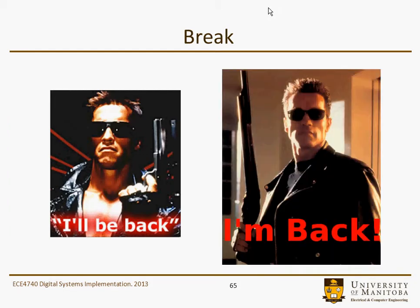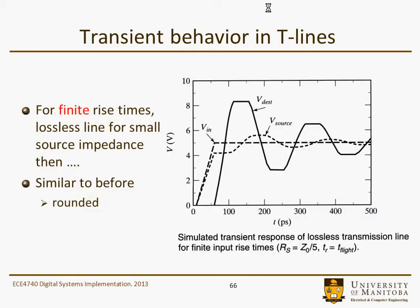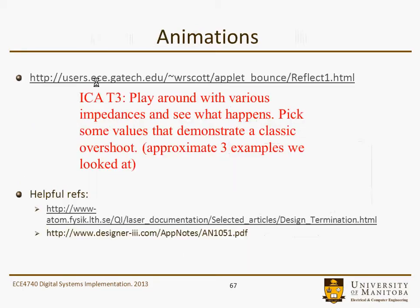Last section from the transmission lines, I hope. Before, we looked at the transient behavior of transmission lines and we looked at the case where we had infinite rise time. In this case, it's a similar type of graph, but we have a finite rise time. And as you can see, what happens here is basically the waveform is the same, but it's rounded out a little bit.